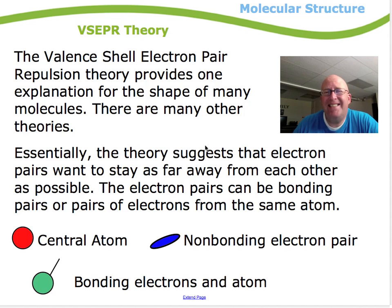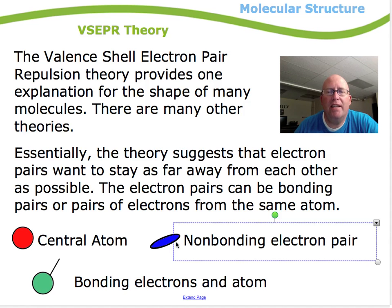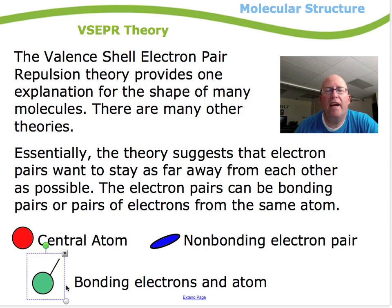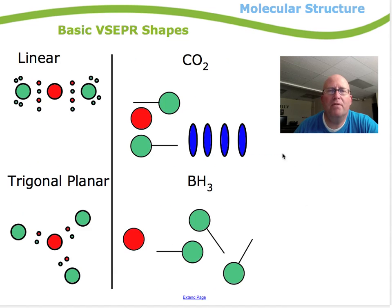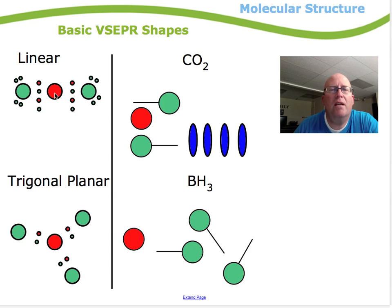The theory basically says that electron pairs want to stay as far away from each other as possible — whether I have non-bonding electrons or bonding electrons, the electrons try to stay as far away from each other as possible. Let's take a look at four or five examples. Here's one where I have a linear molecule — this is a molecule of carbon dioxide.